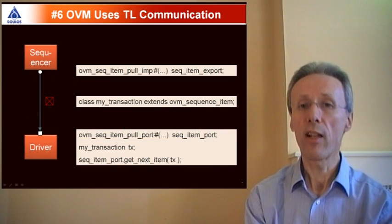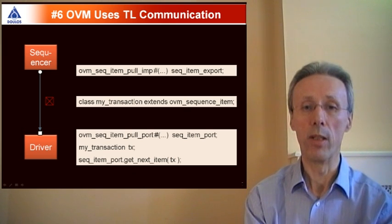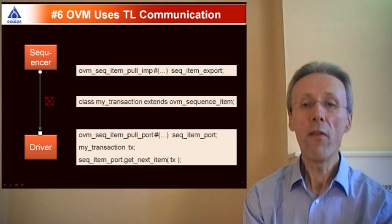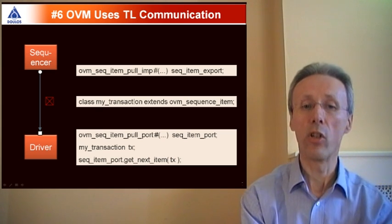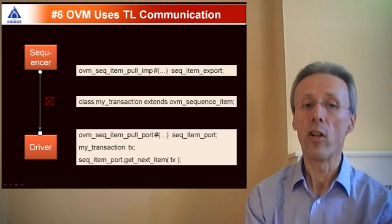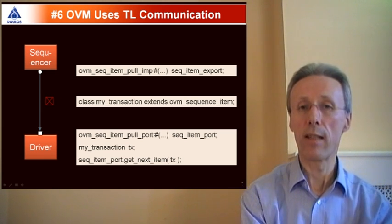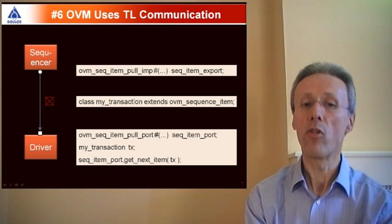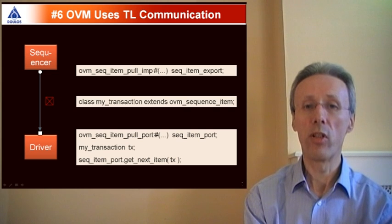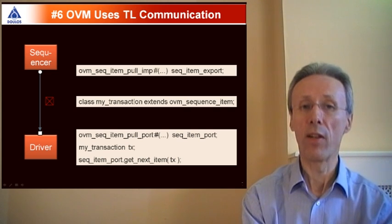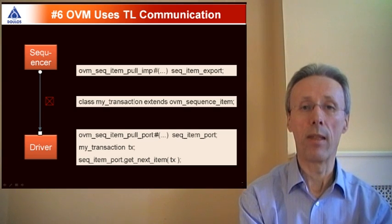Number seven: OVM makes use of transaction level communication between the components in the verification environment. A verification component wishing to initiate communication would instantiate an OVM port and then make a method call, such as getNextItem in this example, to send a transaction through that port. The port would be bound to an export on another verification component that implements that getNextItem method.